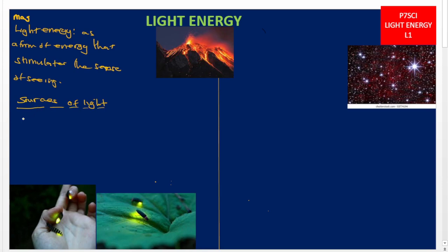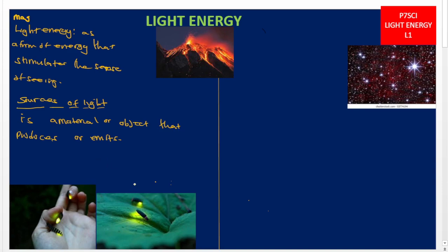A light source is a material or an object that produces or emits light. These sources of light are classified into two: one, we have the natural sources, and two, we have the artificial sources.